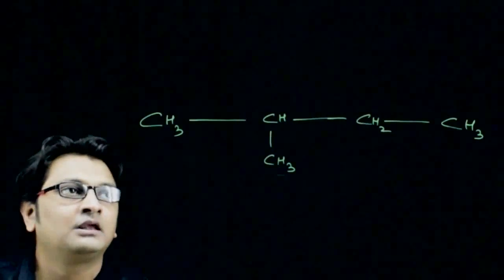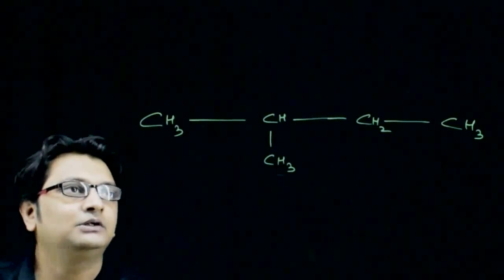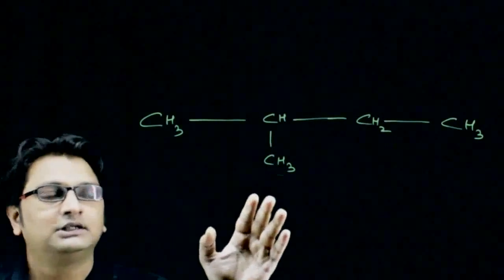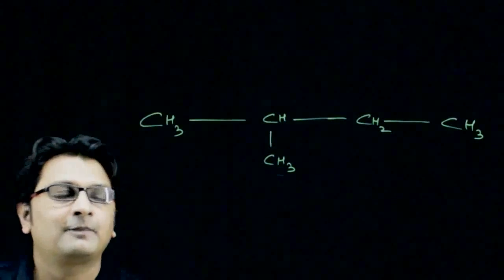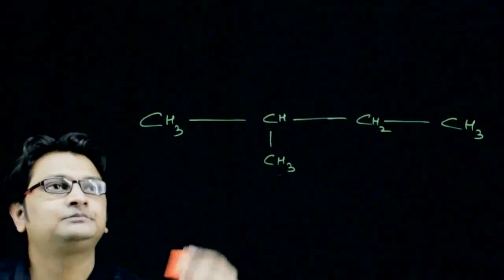Welcome back. So this is the structure of the given organic compound. As there is no double bond or triple bond, it is from the alkane family. Let us choose the longest carbon chain.